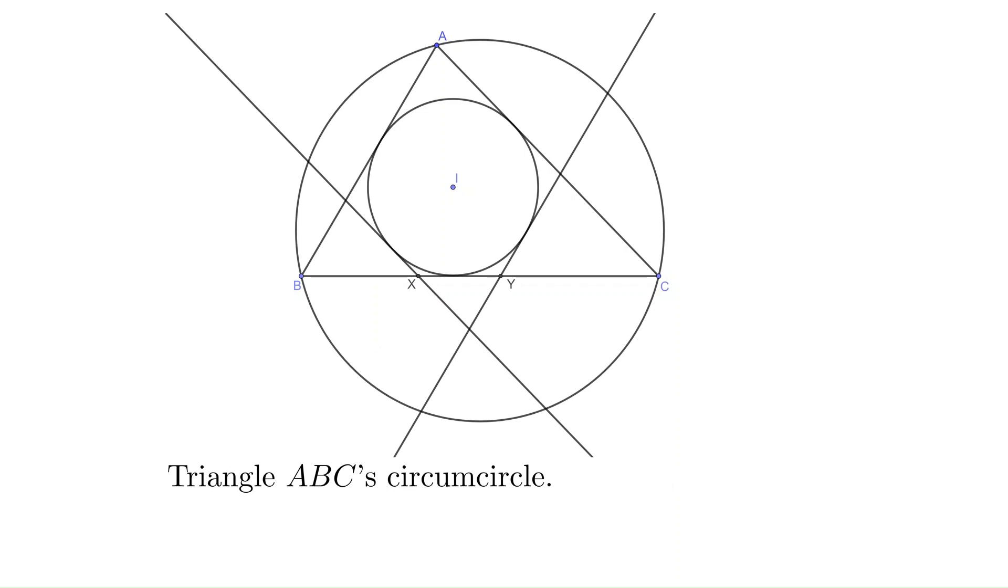Draw the circumcircle of the triangle, connecting A and I and extend it to the other side of the circumcircle and label the intersection as point P.